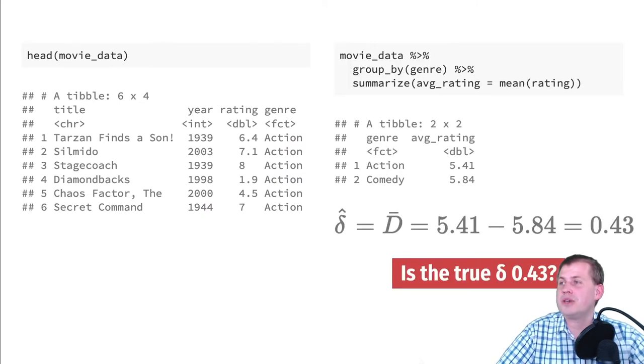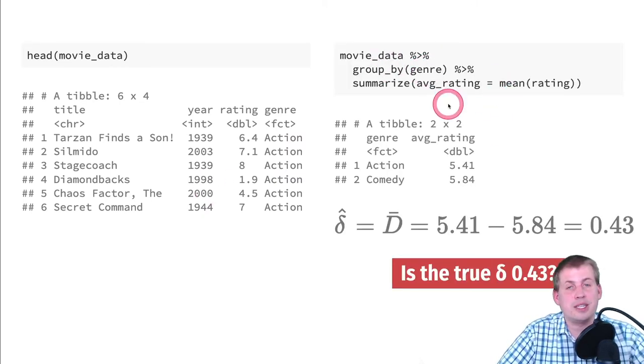Assuming we have a dataset called movie_data, running the head function shows the first six rows. We have columns for title, year, rating, and genre. For example, Stagecoach from 1939 — that's a pretty good movie. Diamondbacks from 1998 with a rating of 1.9 probably isn't great. We want to figure out the average rating for action movies and the average rating for comedies, then find the difference between the two.